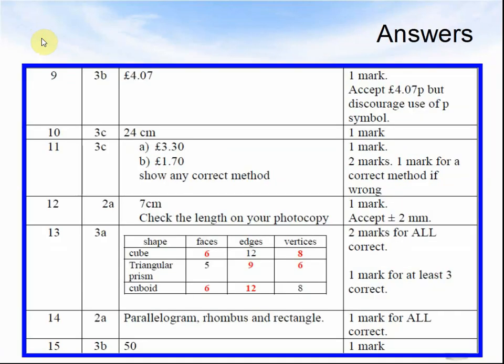Question 9: £4.07. Question 10: 24 centimetres. Question 11a: £3.30. Question 11b: £1.70, showing any correct method. Question 12: 7 centimetres. Question 13: A cube has 6 faces, 12 edges, 8 vertices. A triangular prism has 5 faces, 9 edges, 6 vertices. A cuboid has 6 faces, 12 edges, 8 vertices.